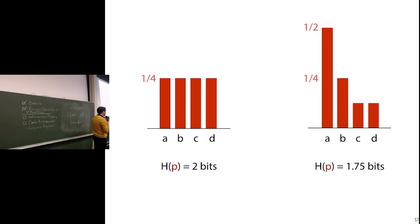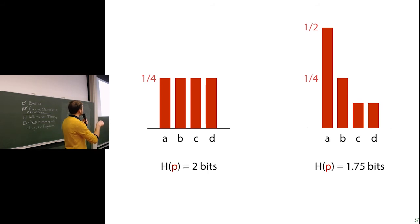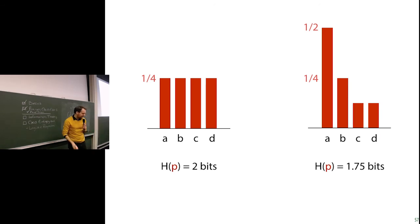The nice thing about entropy is that it expresses how uniform our data is — it's a very good expression of the uncertainty we have over outcomes. For a perfectly uniform distribution over four outcomes, each with probability 1/4, the entropy is exactly two bits, because you need two bits to describe each outcome and they're all equal so no outcome has a higher code length than any other. But if the distribution is skewed — if A is much more likely than B — the entropy will be lower.